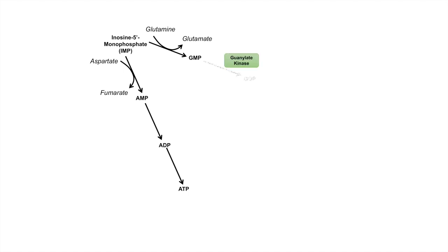IMP can also go down a different pathway. It can be processed into GMP via the utilization of the amino acid glutamine — GMP and glutamine both start with G, so that's an easy way to remember which amino acid is required. Once you have GMP, it will be processed into GDP by the enzyme guanylate kinase, and then GDP will be processed to GTP.